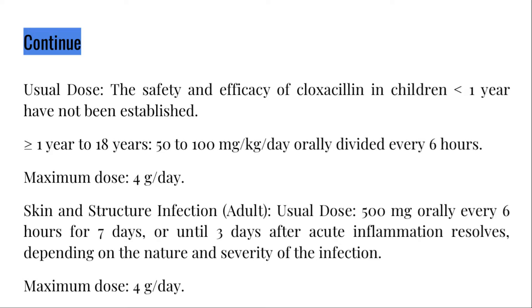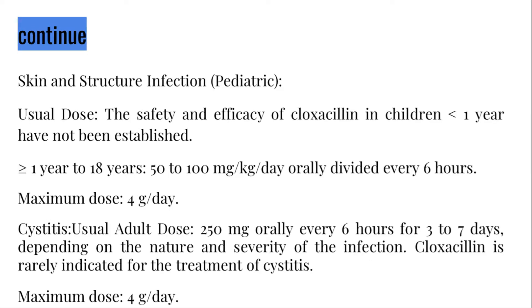Skin and structure infection, adult: usual dose 500 milligrams orally every six hours for seven days, or until three days after acute inflammation resolves, depending on the nature and severity of the infection. Pediatric: the safety and efficacy of cloxicillin in children less than one year have not been established. For one year to 18 years: 50 to 100 milligrams per kilogram per day orally, divided every six hours.